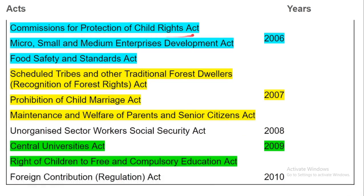Commission for Protection of Child Rights Act, Micro Small and Medium Enterprises Development Act, and Food Safety and Standards Act — these three acts passed in 2006. Scheduled Tribes and Other Traditional Forest Dwellers Recognition of Forest Rights Act, Prohibition of Child Marriage Act, and Maintenance and Welfare of Parents and Senior Citizens Act — these three acts passed in 2007.